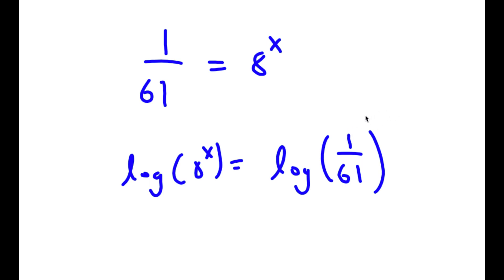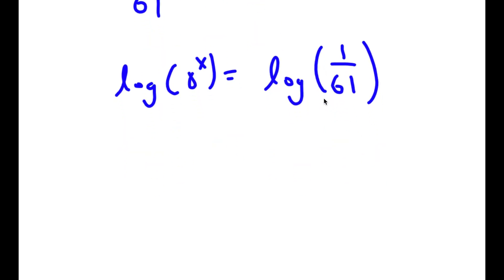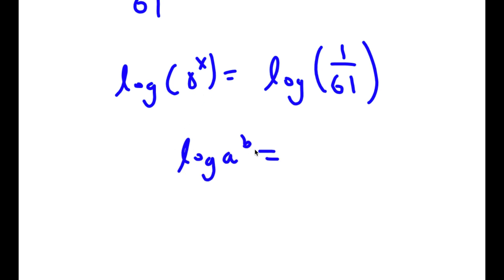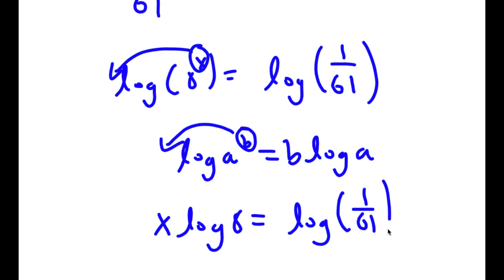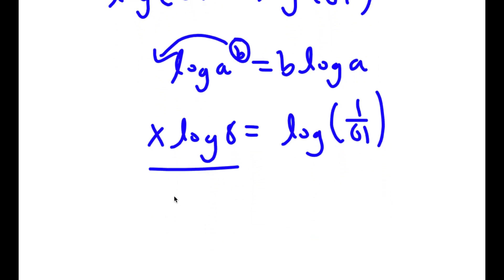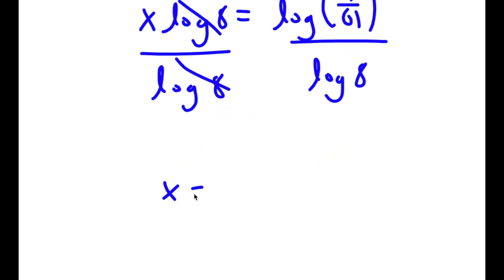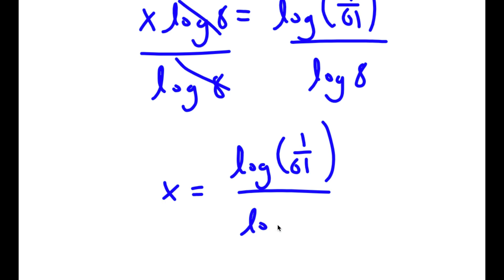Now, before I do that — if I have something in the form log a to the power of b, I can move exponent b to the front, so this equals b times log a. So in this case, I have log 8 to the power of x, and I can move x to the front. So now I have x times log 8 is equal to log of 1 over 61. So now if I divide both sides by log 8, these two cancel out, and I have x is equal to log of 1 over 61 over log 8.